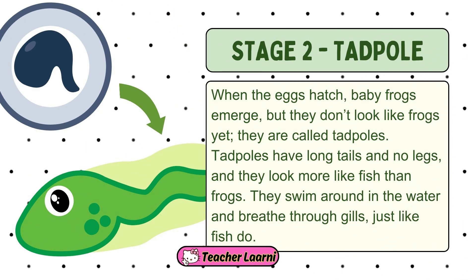Stage 2 – The Tadpole. When the eggs hatch, baby frogs emerge, but they don't look like frogs yet — they are called tadpoles. Tadpoles have long tails and no legs, and they look more like fish than frogs. They swim around in the water and breathe through gills, just like fish do.